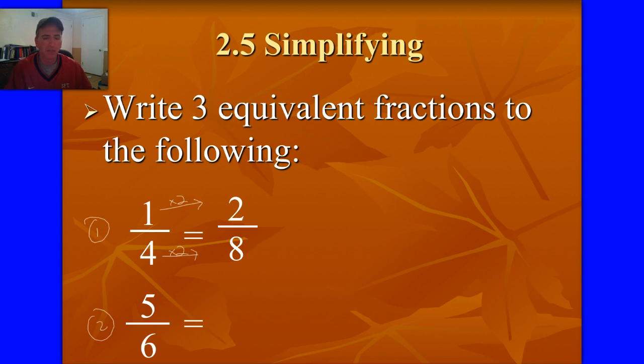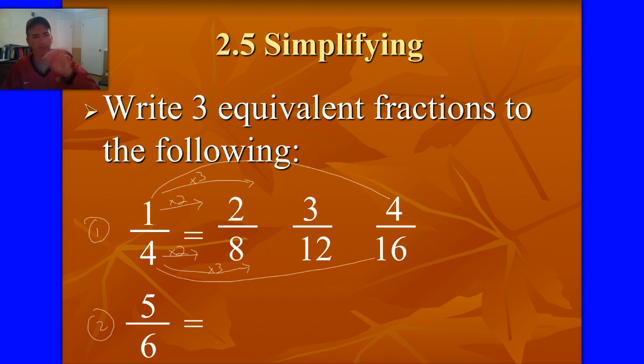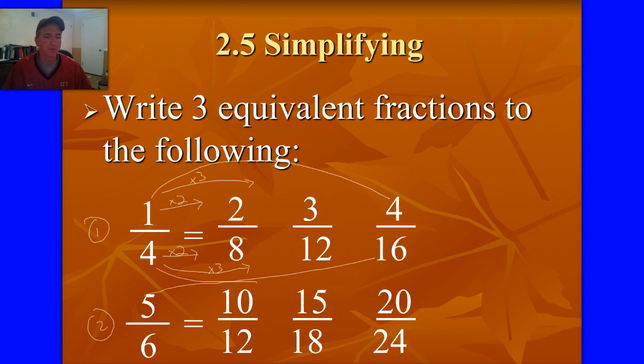It's the same amount just written differently. I could have, instead of multiplying by two, I could have multiplied times three. One times three, four times three, and that would have given me three-twelfths. I could have done it again. One times four is four, four times four is sixteen. The key is that you multiply the top and the bottom by the same thing. So if I do the same thing to number two, five-sixths. If I multiply it by two, ten over twelve. If I did the same thing times three, you'd have fifteen-eighteenths. Or again, by four, you'd have twenty over twenty-four. It's all the same amount. These are all equal fractions, just written differently.